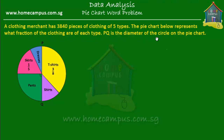PQ is the diameter of the circle on the pie chart. A diameter divides the circle into two halves, so in the case of this pie chart, it divides the pie into two halves. So the t-shirts and the shirts together constitute half the clothing, and the dresses, skirts and pants constitute the other half of the total number of pieces of clothing.